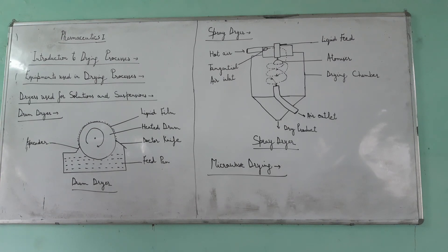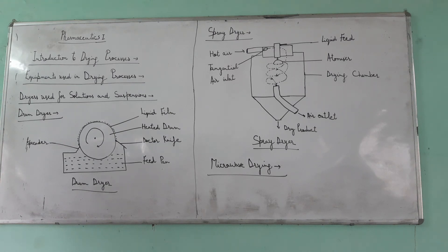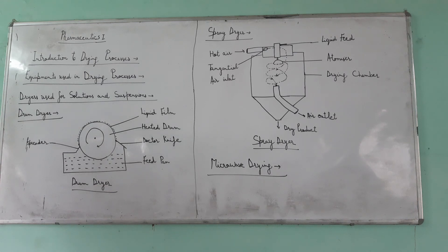The tension energy converts to kinetic energy, and the kinetic energy converts to thermal energy. In industrial settings, microwave static continuous operation can be used with a conveyor belt system for movement through the microwave heating chamber. This method is useful for preserving heat-sensitive components such as vitamins, enzymes, proteins, and flavor compounds.